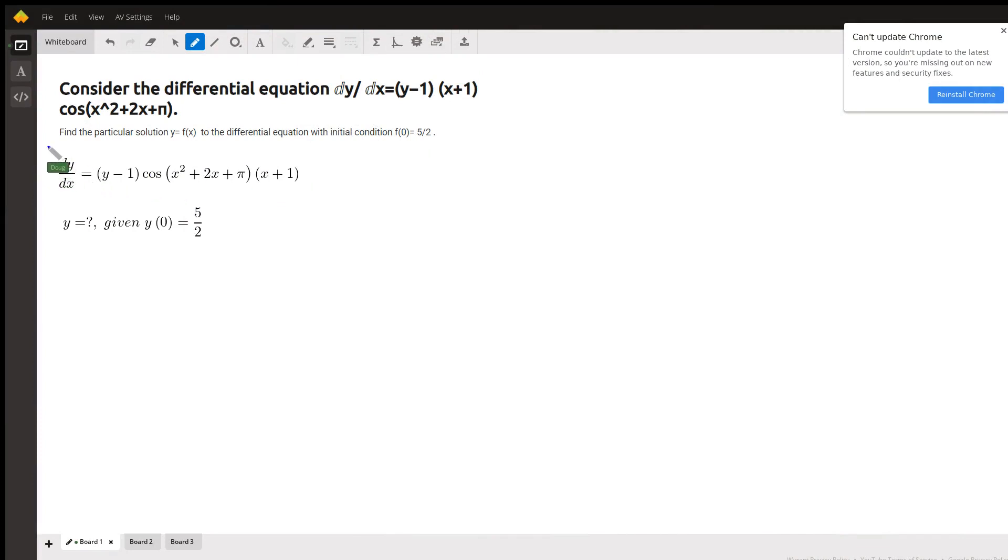Here's the differential equation we're trying to solve for a particular solution, given that f of 0 equals 5 halves. So we want to know what does y equal, given that when x is 0, y is 5 halves.